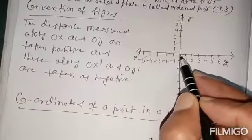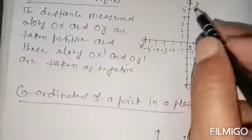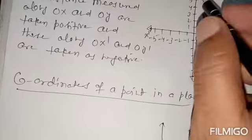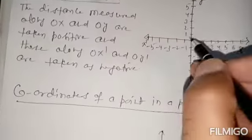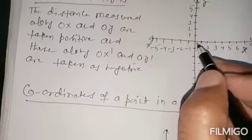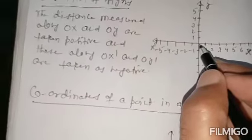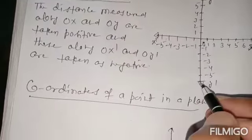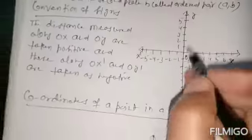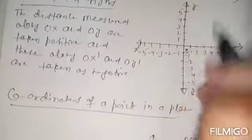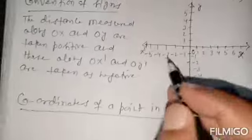Now we have to know the convention of signs. The distance measured along OX and OY, where O is the origin, are taken positive: 1, 2, 3, 4. And those along OX' and OY' are taken negative: minus 1, minus 2, minus 3, minus 4, and so on. So OX and OY are taken positive and OX' and OY' are taken negative.